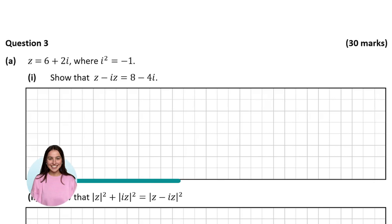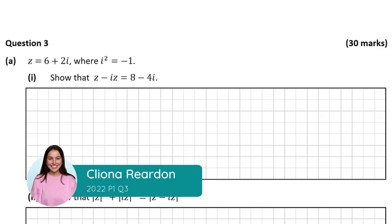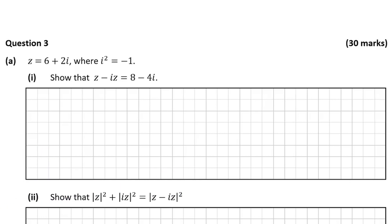Hello everyone and welcome to this video. My name is Lina and today I'm going to take you through the solution to question 3 from this Leaving Cert higher level paper. This question is based on complex numbers. We're told that z is equal to 6 plus 2i, where i squared is equal to minus 1, which is the general rule in complex numbers.